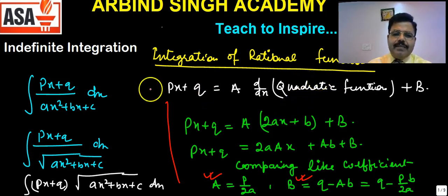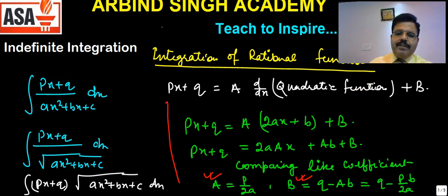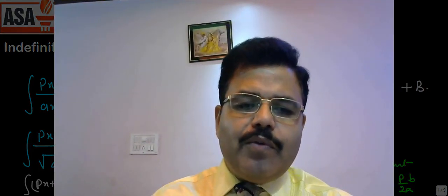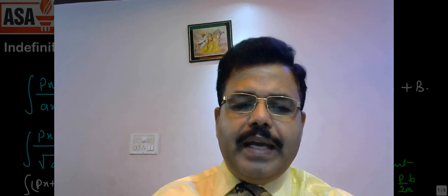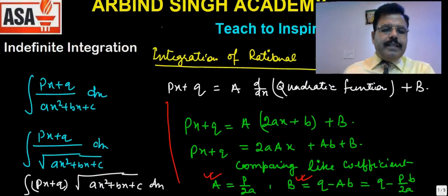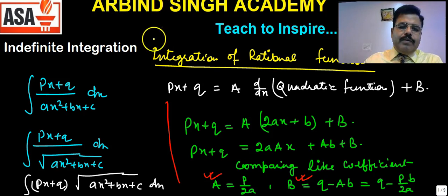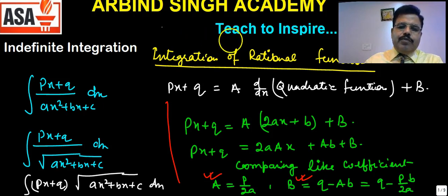This is a rational function, and a rational function can be integrated by using this transformation — writing the linear function in this form. So let us discuss; hopefully you understand what to write and how to write, and thereafter we can solve some questions as well. The first question I am going to discuss today is: I = integral of (2x + 3) / (x² - 2x + 4) dx.